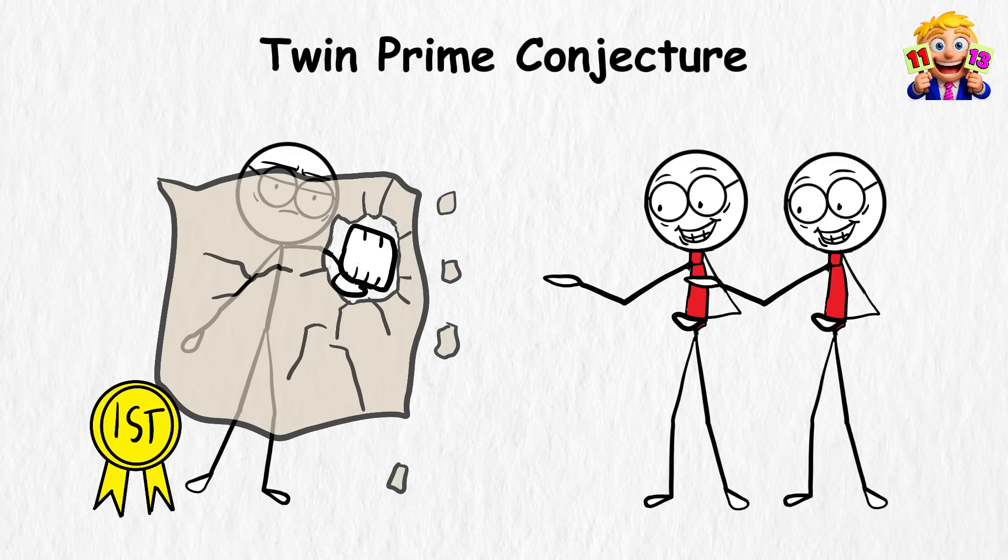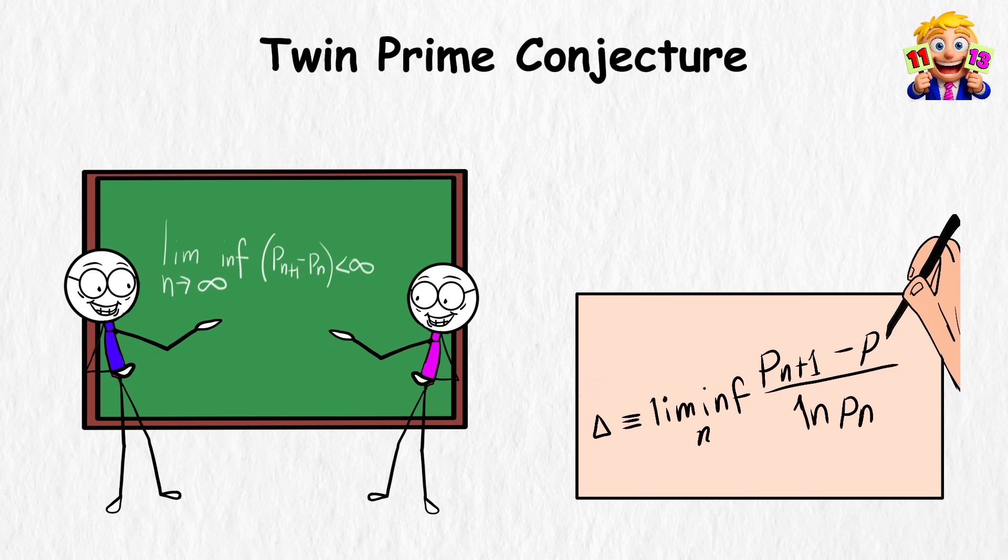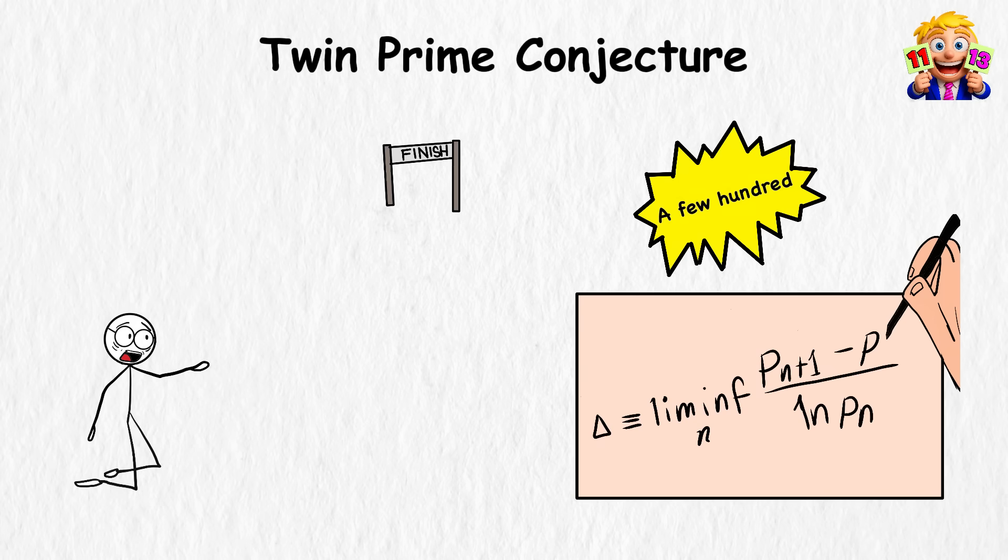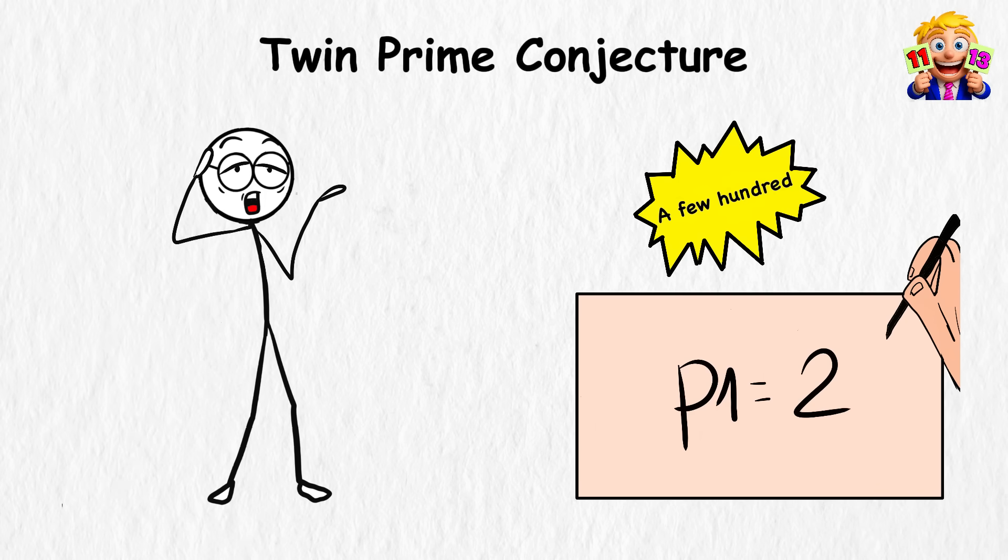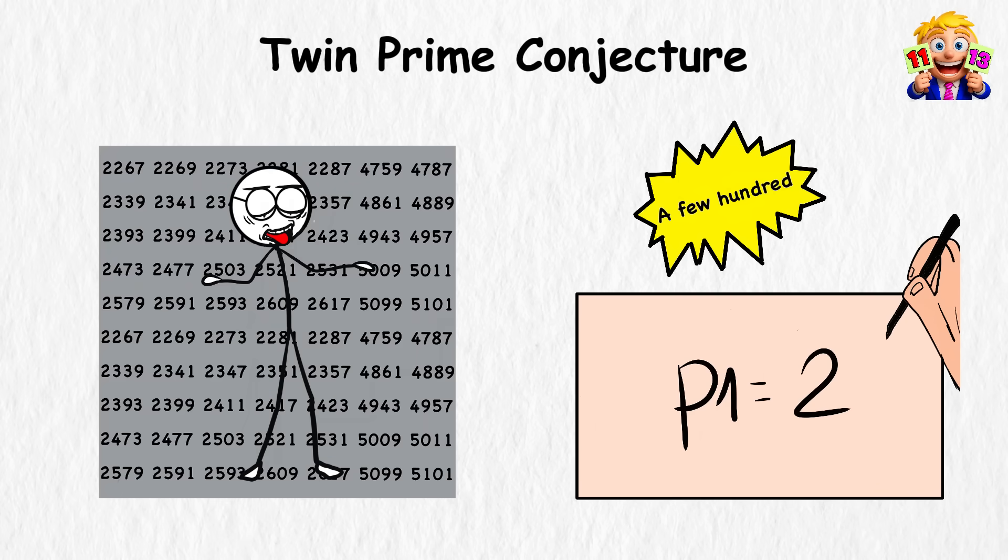Since then, other mathematicians have chipped away at Zhang's results, closing the gap from 70 million down to just a few hundred. But the finish line is still far off. To prove the twin prime conjecture once and for all, that gap needs to shrink all the way down to two. If that ever happens, we'd finally know for sure that twin primes never run out.